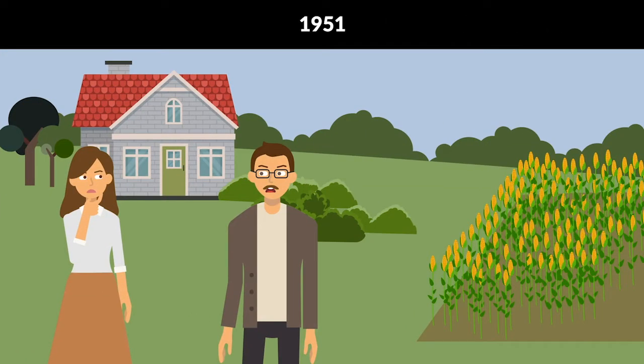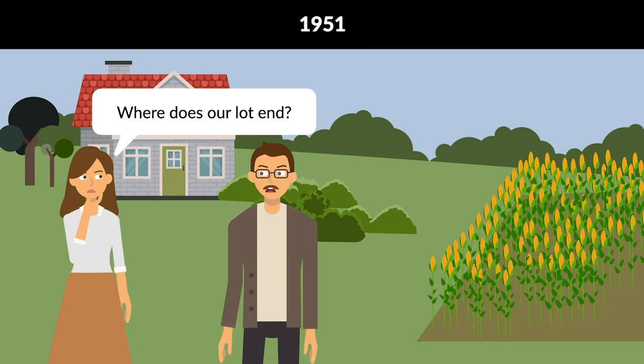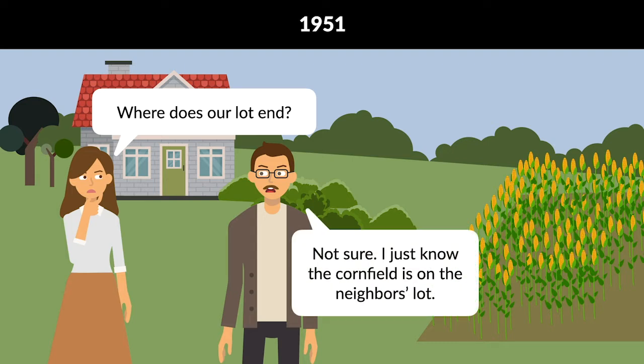Virginia Carpenter and her husband bought a house in Des Moines, Iowa in 1951. An undeveloped lot bordered their property to the north. This lot contained a cornfield that didn't reach the border of the Carpenter's property. The Carpenters weren't sure exactly where their northern property line was, but they knew the dimensions of their lot and that their property didn't include the cornfield.